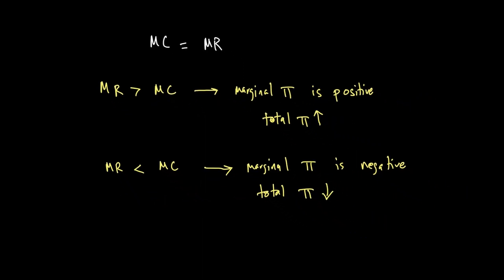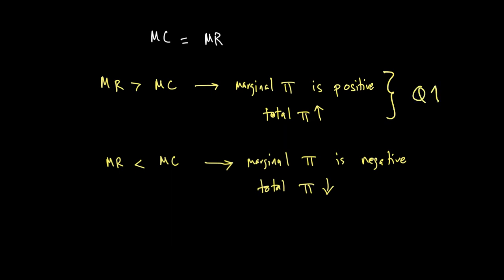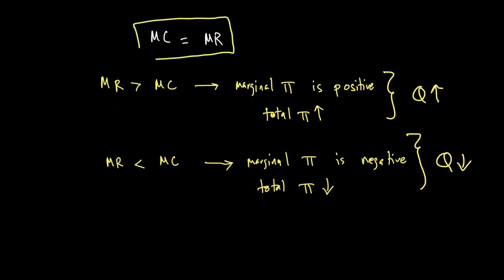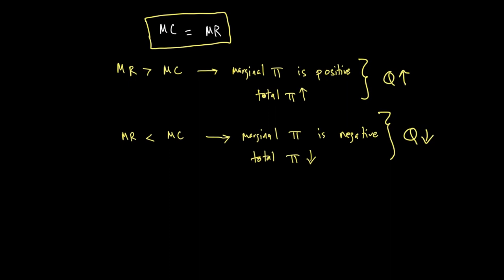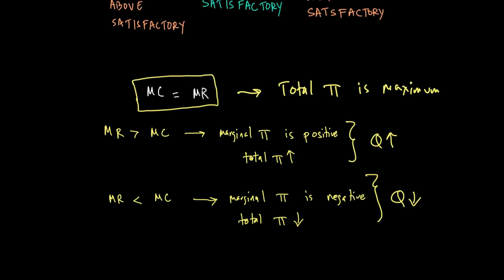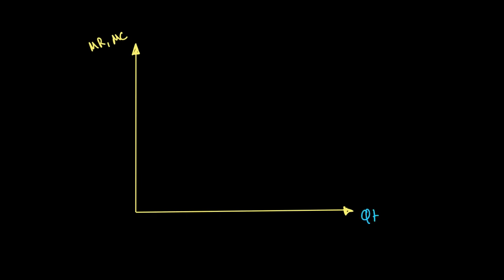When MR is greater than MC, marginal profit is positive and firms should produce more. When MR is less than MC, marginal profit is negative and firms should produce less. When MC equals MR, total profit is maximum. To understand why MC equals MR is the profit-maximizing level of output, we can draw a diagram of MC and MR curves.